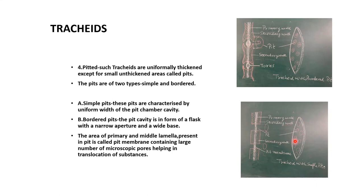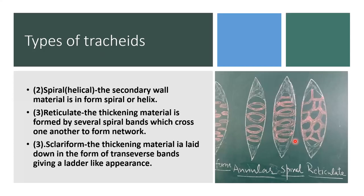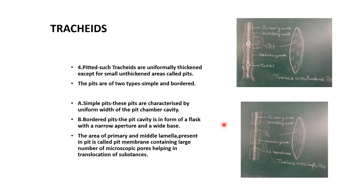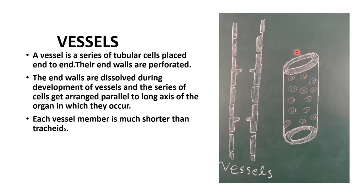To recap, thickenings in tracheids can be in the form of rings (annular), spiral, network (reticulate), ladder-like (scleriform), simple pitted thickening, and bordered pitted thickening.